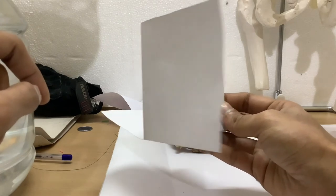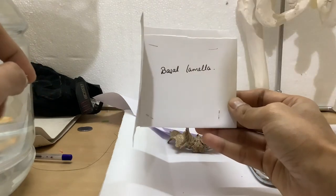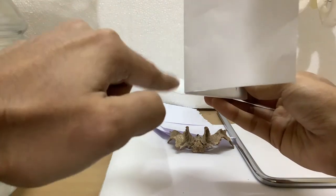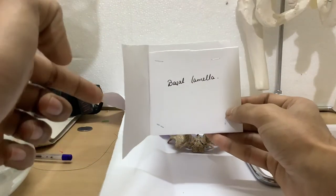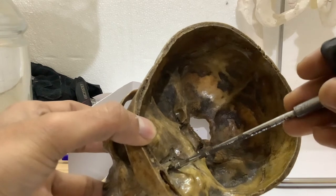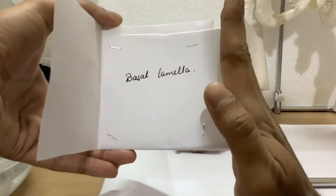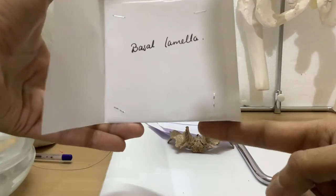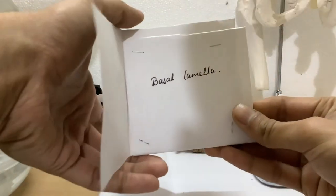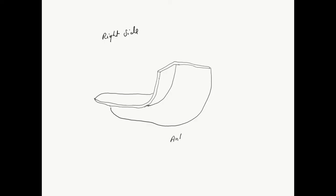The middle turbinate of the left nostril can be divided into three parts: the anterior one-third directed sagittally, the middle one-third directed coronally, and the posterior one-third which has a horizontal orientation. The anterior one-third articulates with the skull base at the region of the middle and lateral lamella in the cribriform plate. The middle one-third, or basal lamella, is attached to the lamina papyracea, and the posterior horizontal part is also attached to the lamina papyracea laterally.